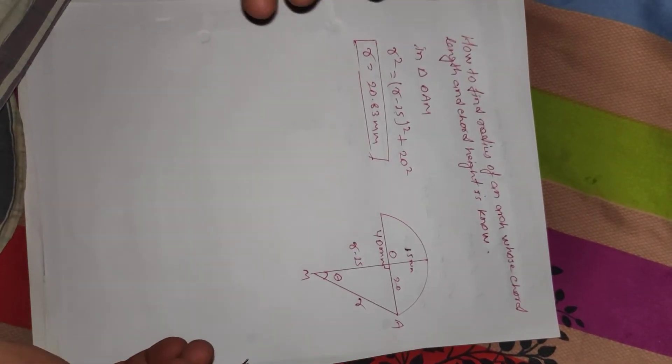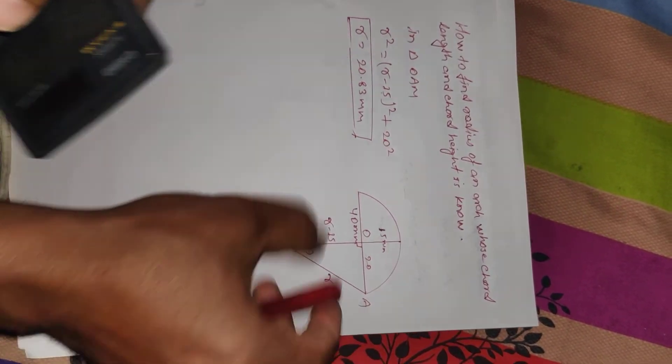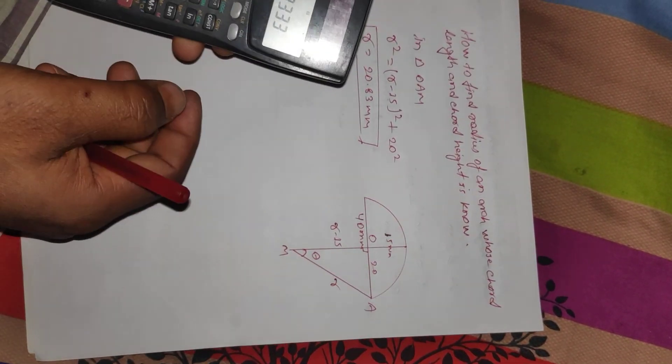In this way you can find the radius of any arc whose chord length is known and chord height is known. Thank you for watching.